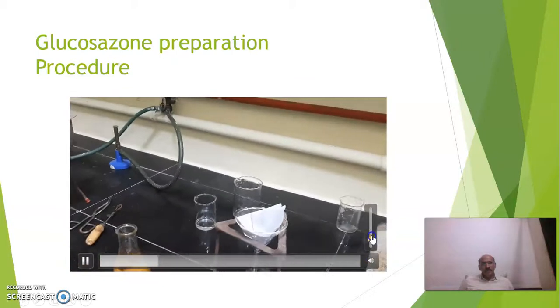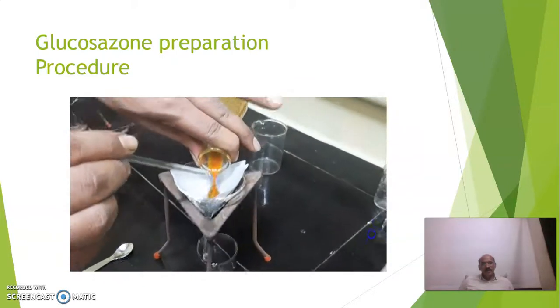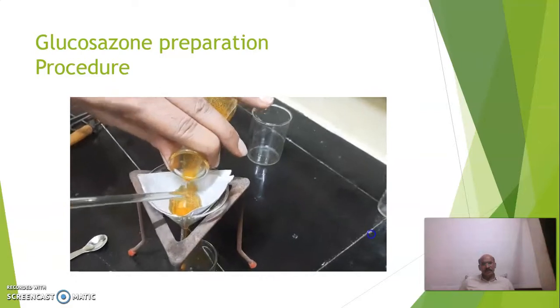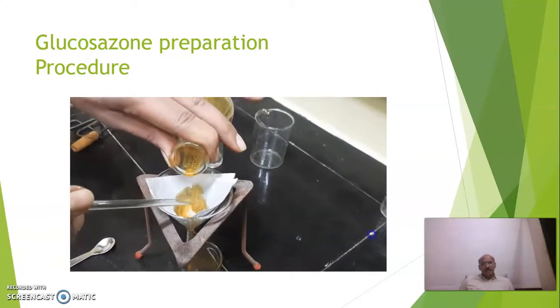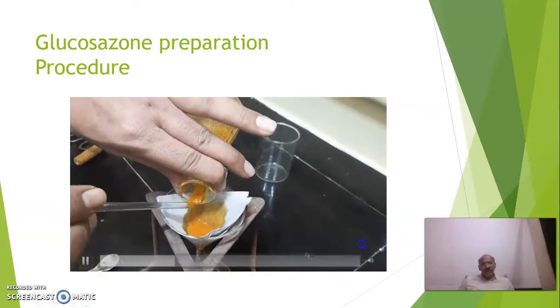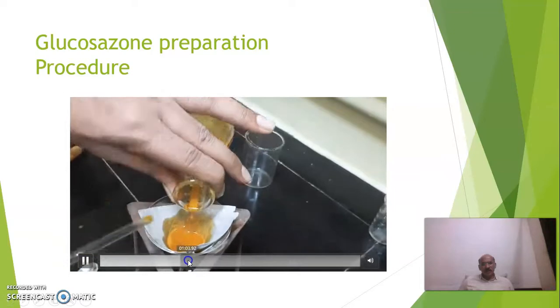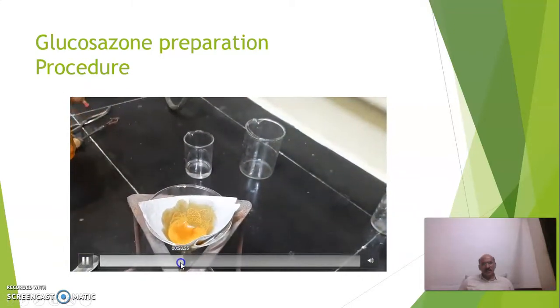After cooling, we have to filter it. After crystallization, it will be clear yellow. Now little brownish shade is there.